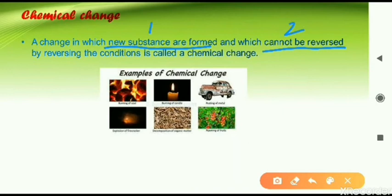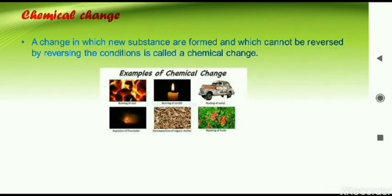There can be many examples of chemical change — like the burning of anything: paper, coal, or wood. Similarly, the growth of plants, digestion of food, burning of a candle, and rusting of iron are all chemical changes. We will now see all these chemical changes in detail one by one.